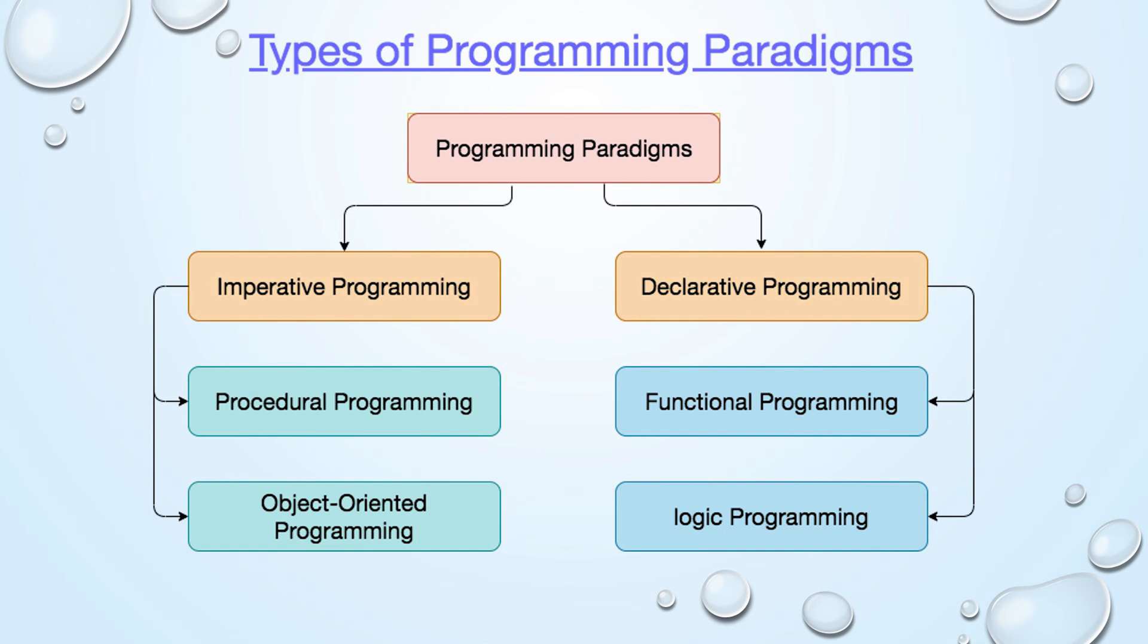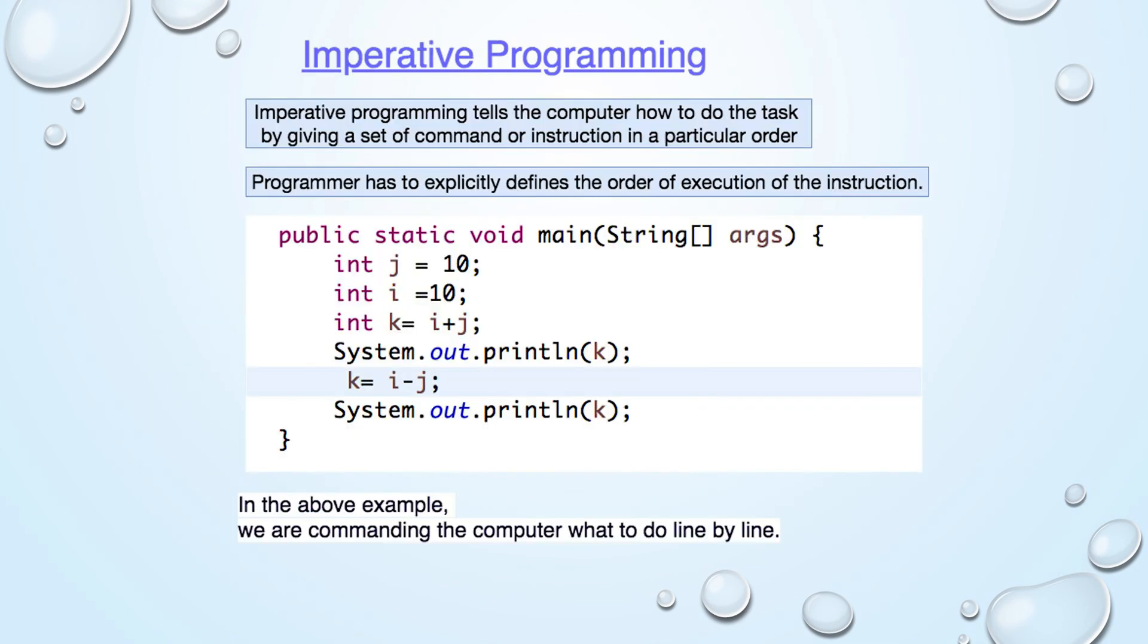Let us examine each of these points in further depth. Imperative programming. The word imperative implies command. Imperative programming tells the computer how to complete a task by giving a list of commands or instructions in a specific order.